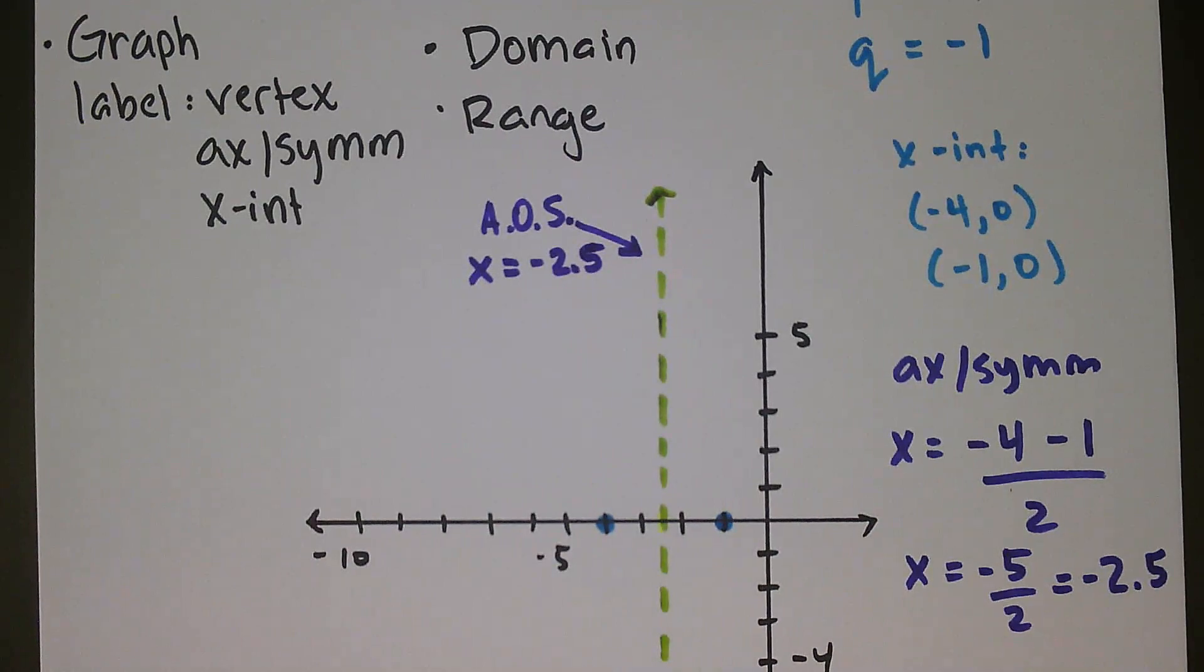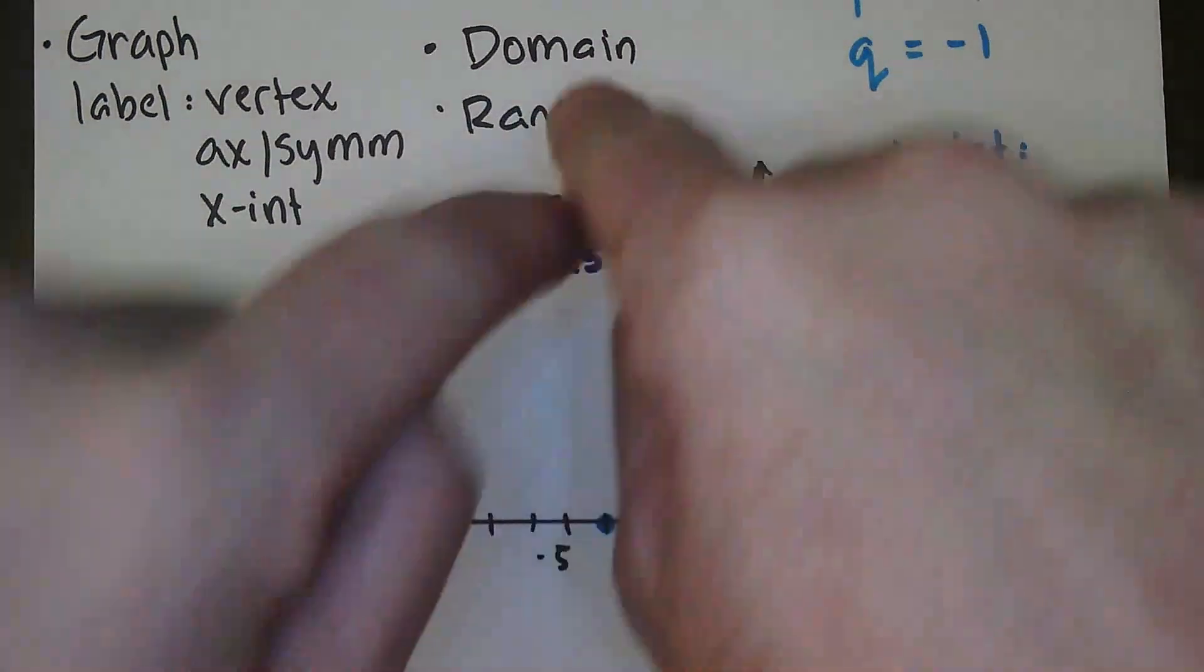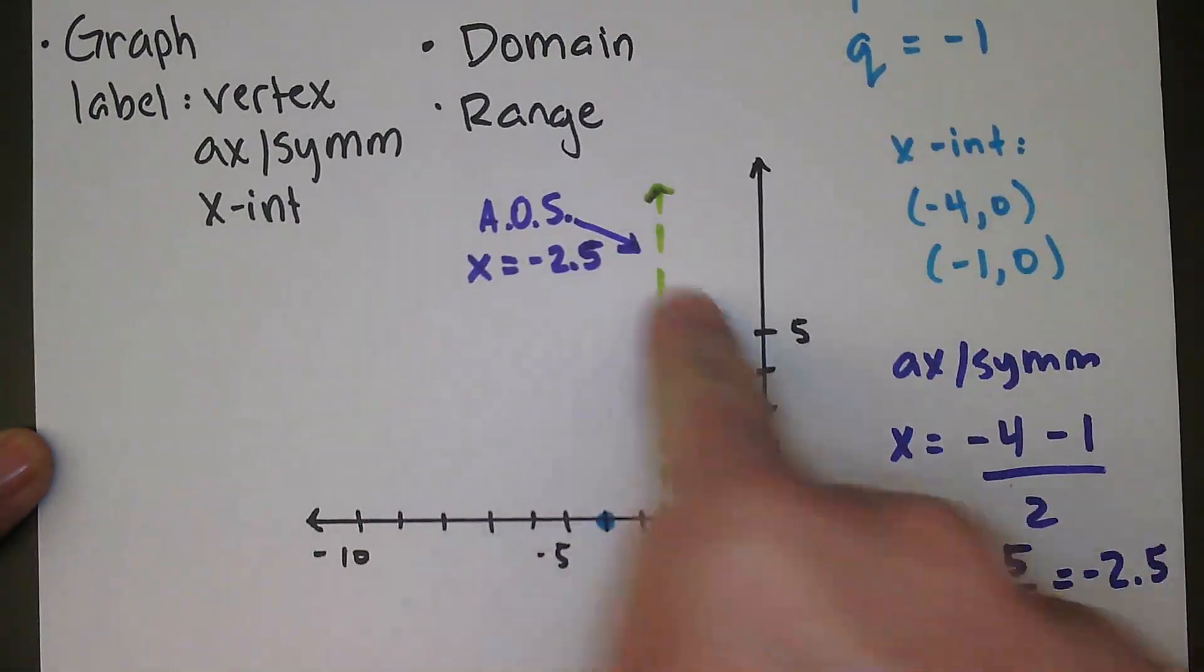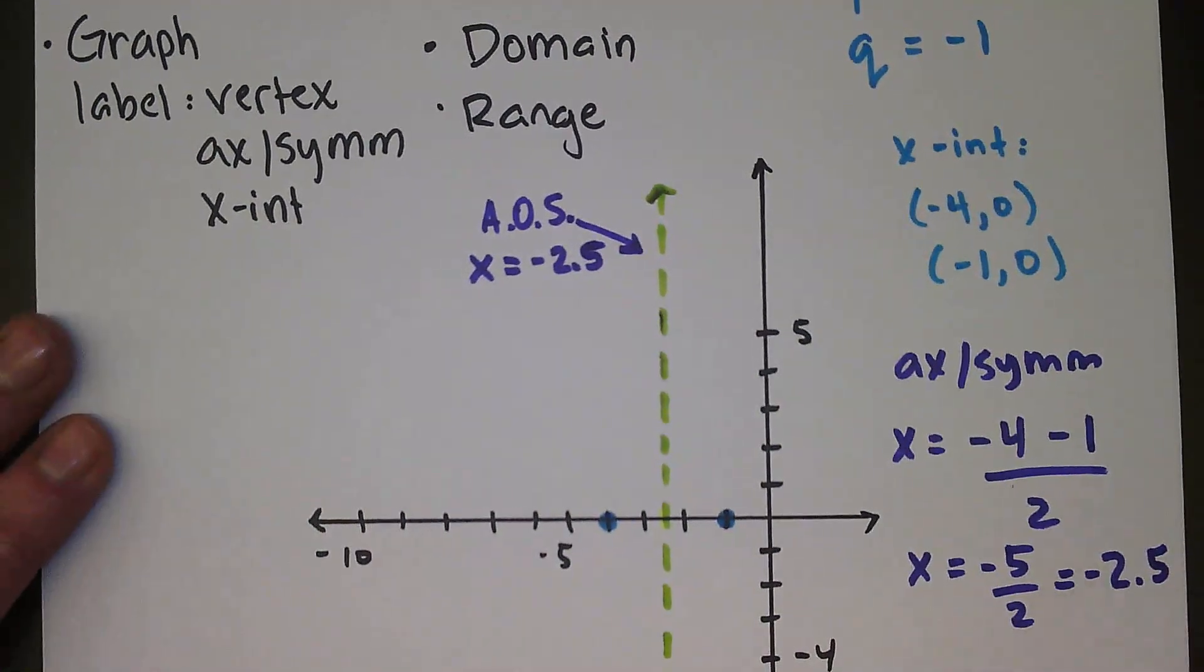So really all we need from here is where that vertex is. And then I can just connect the vertex to those two points. So let's see. How do I find the vertex? Well, I know it's on the axis of symmetry, and I know that x value is 2.5.